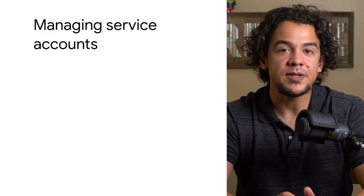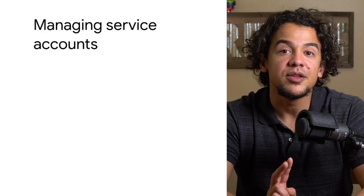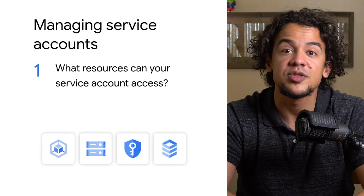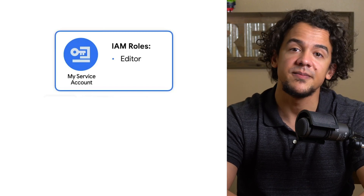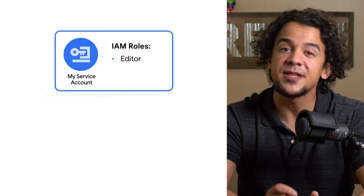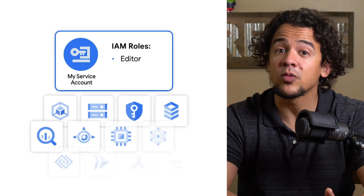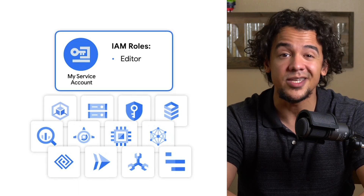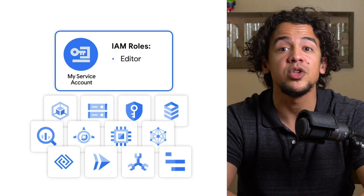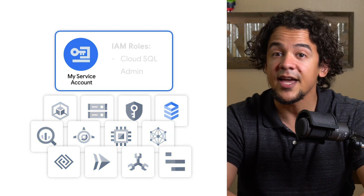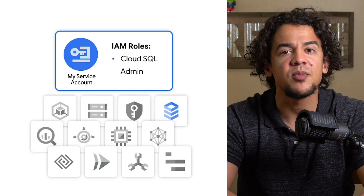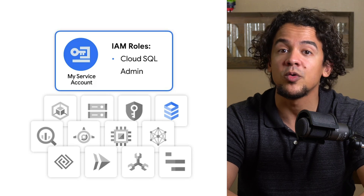When thinking about securely managing service accounts, you could start by asking two questions: What resources can your service accounts access? And what permissions do your service accounts need? For example, let's take a service account with the editor role assigned. With the editor role, the answer to what resources it can access is pretty much all of them. So what permissions does this service account actually need? The answer will depend on what you need the service account to do, and it's likely to be a lot less than the permissions associated with the editor role. This means you'll have to adjust the project's IAM policy to delegate the appropriate IAM roles and permissions.